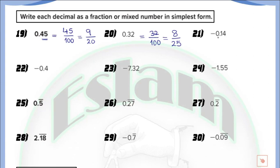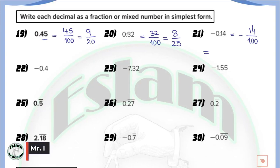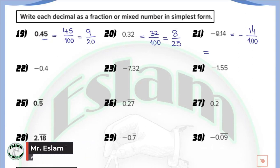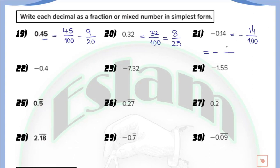In question number 21, we have negative 0.14. Since it's a negative number, put the negative outside the fraction. Write 14 as the numerator. There are two digits at the right of the decimal, so the denominator is 100. The only difference between positive and negative: if the decimal is positive the answer is positive; if negative the answer is negative. If there's a non-zero digit before the decimal, that becomes the whole number making it a mixed number. Simplifying: 14 divided by 2 equals 7, and 100 divided by 2 equals 50. So negative 0.14 in simplest form is negative 7 over 50.